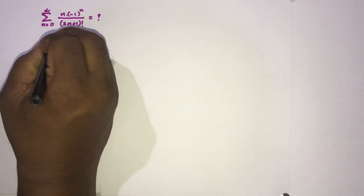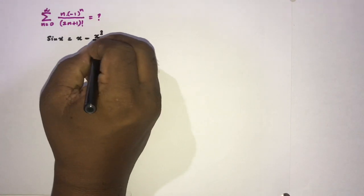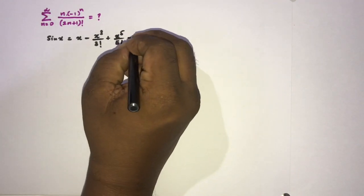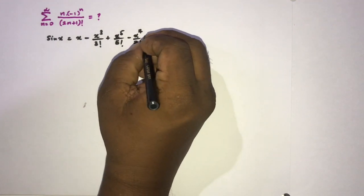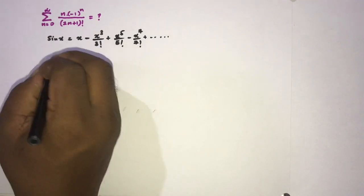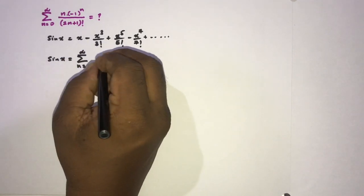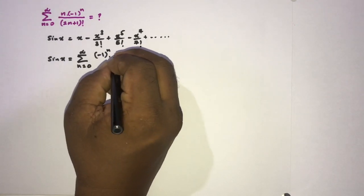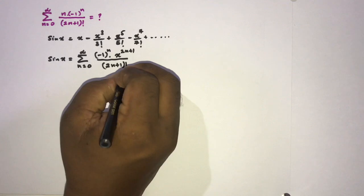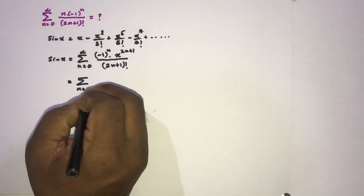I'm going to begin with the Taylor series of sine of x. We know sine of x equals x minus x cubed over three factorial, plus x to the fifth power over five factorial, minus x to the seventh power over seven factorial, and so on. We can also represent this series using sigma notation: sine of x equals the sum from n equals zero to infinity of (-1)^n times x to the (2n+1) power over (2n+1) factorial.